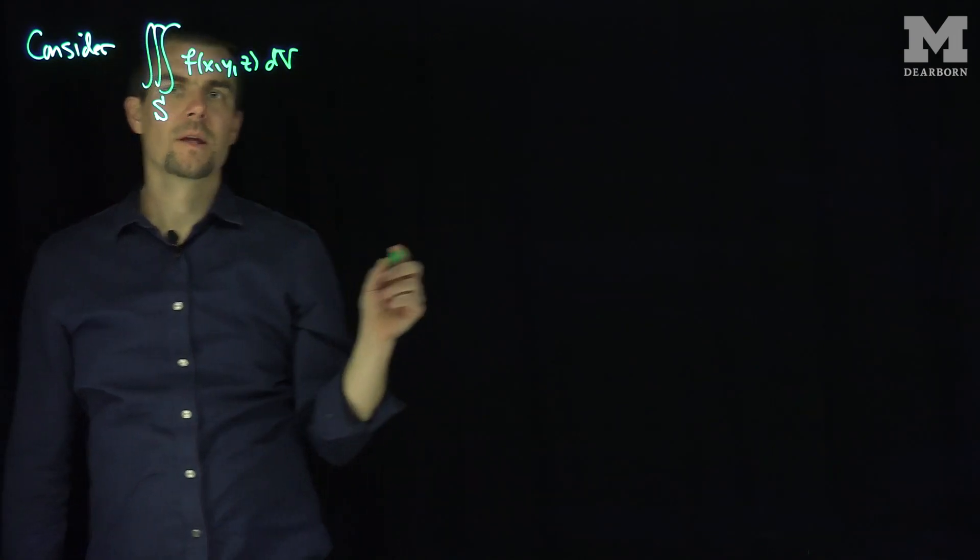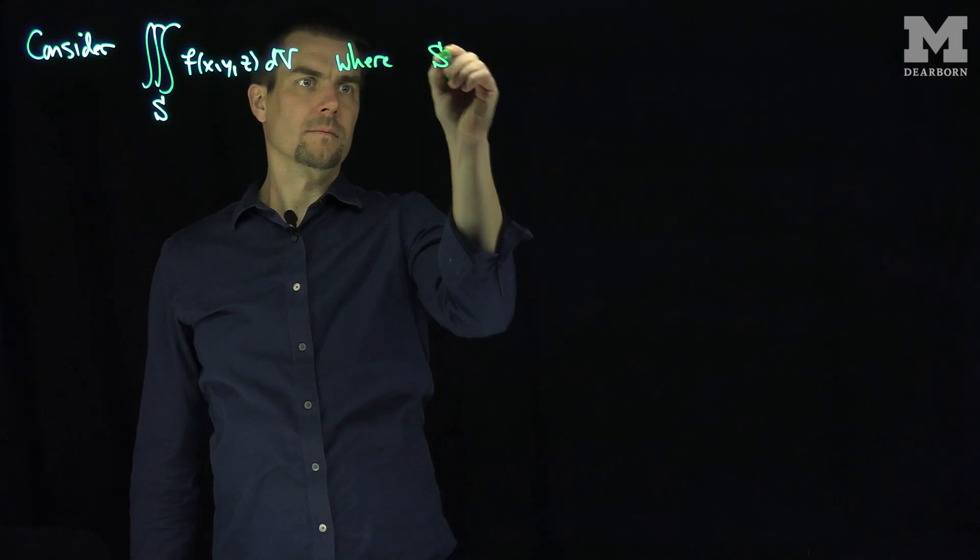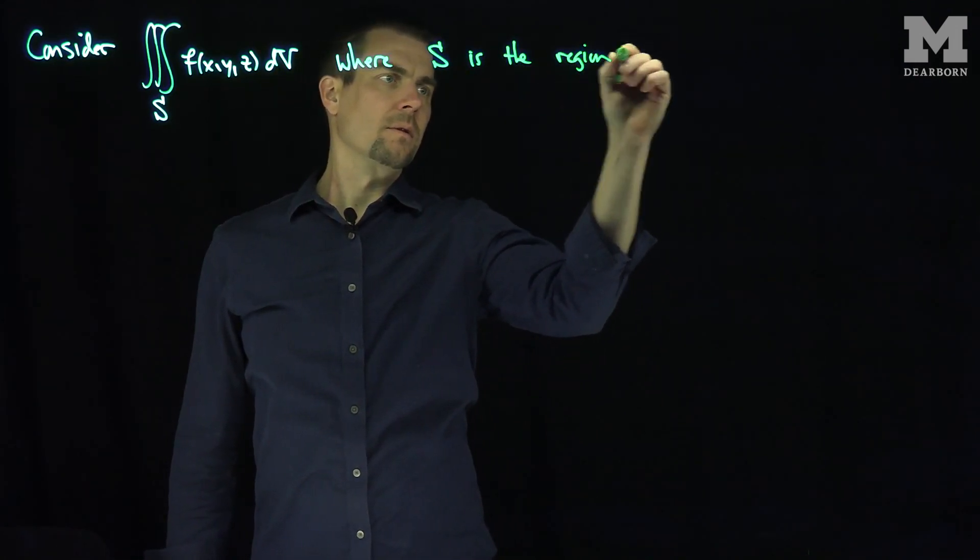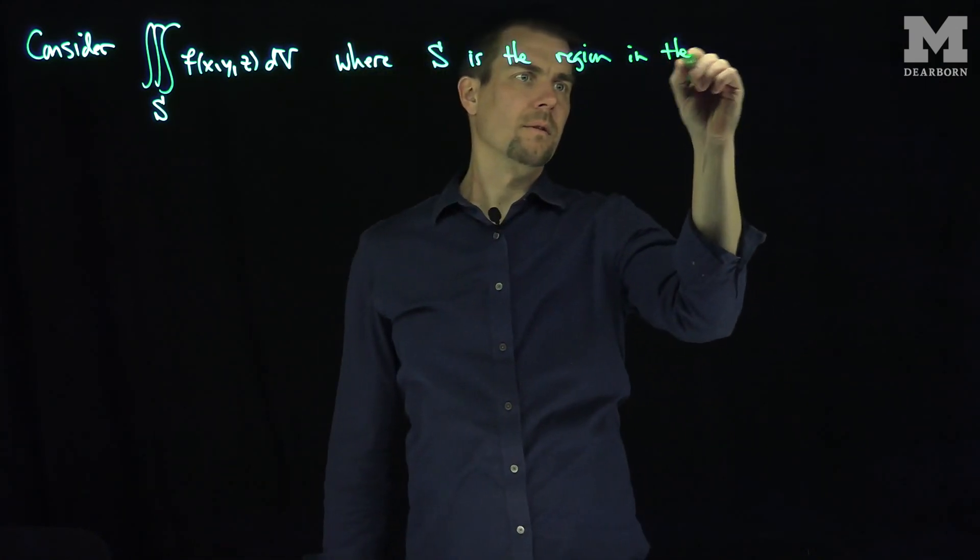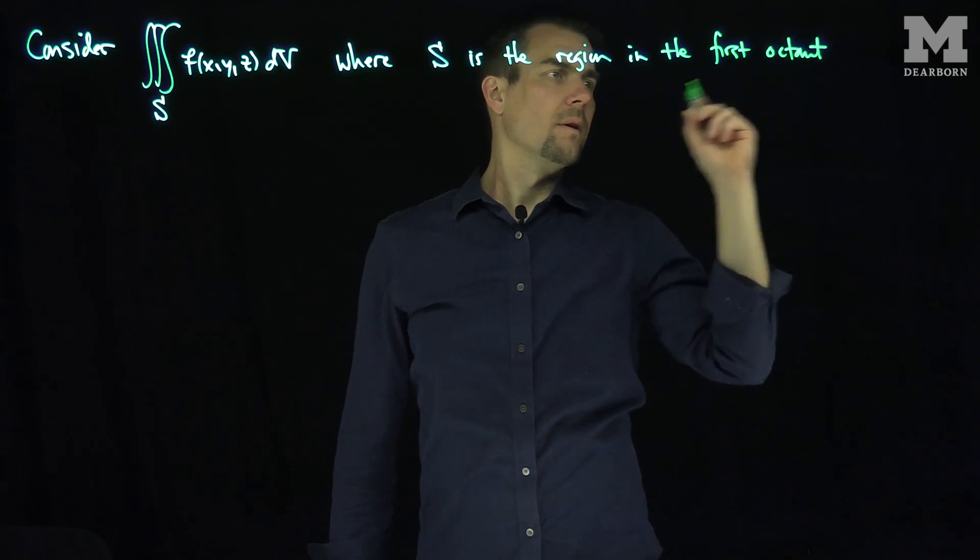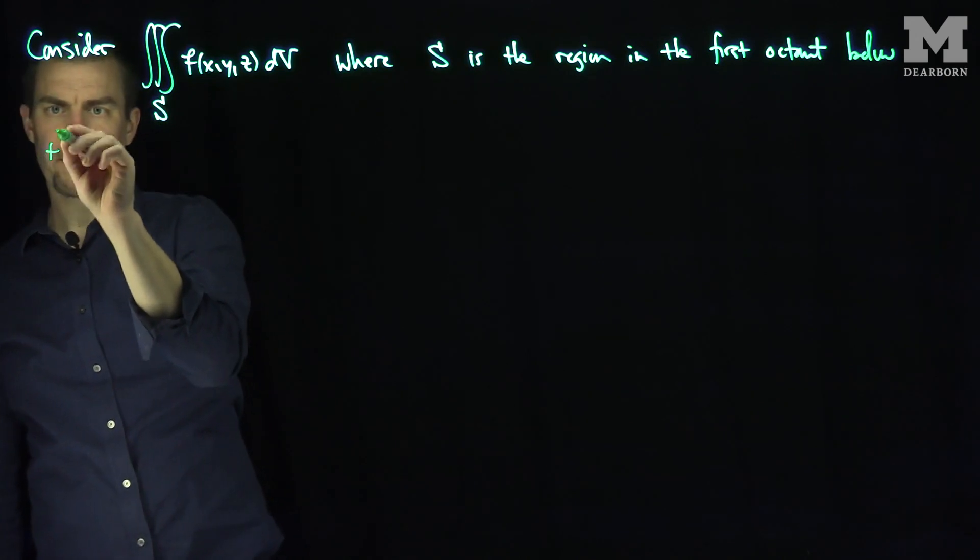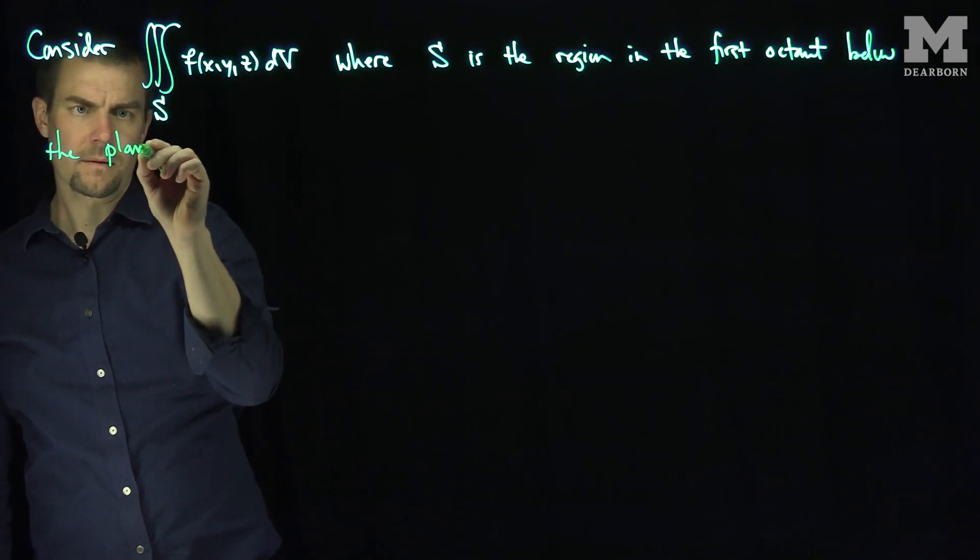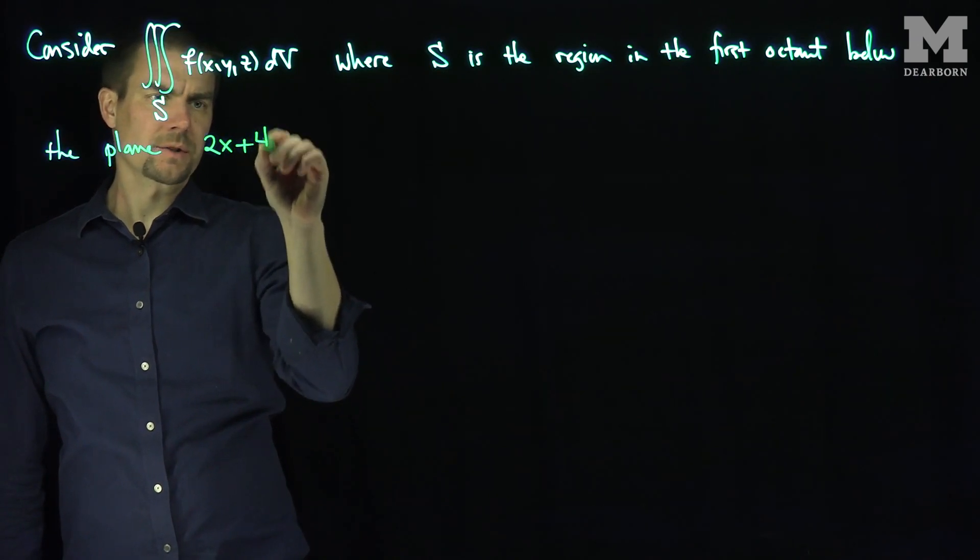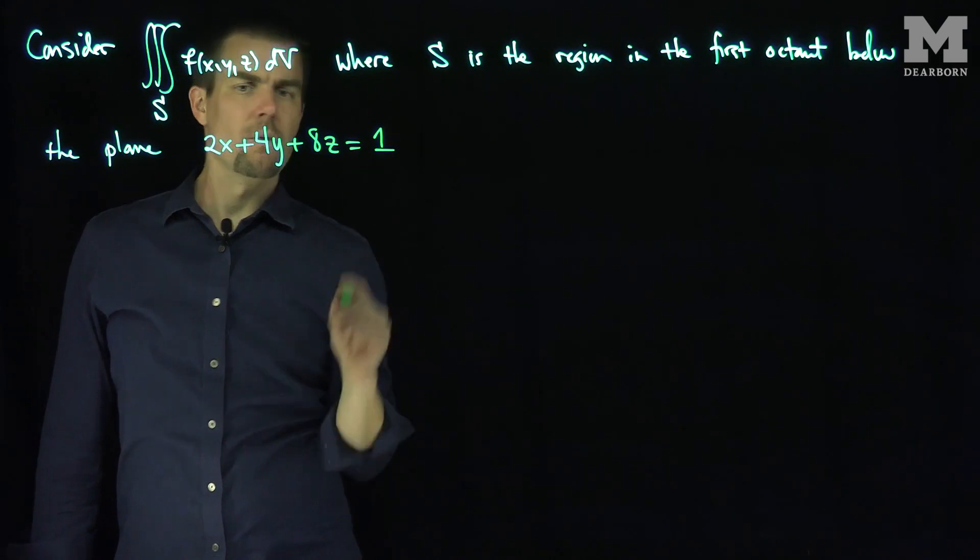where S is the region in the first octant below the plane 2x plus 4y plus 8z equals 1.